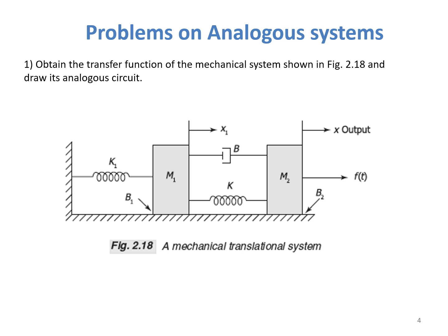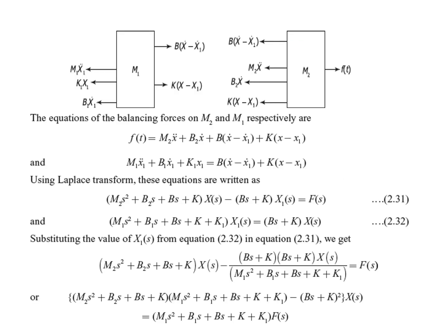Let's now see the free body diagram for the given problem. For mass M1, the applied forces are represented as M1·d²x1/dt², K1·x, B1·x, B(x − x1), and K(x − x1). For mass M2, the forces connected to M2 are B(x − x1), M2·x, B2·x, and K(x − x1). The applied force is represented as F(t).